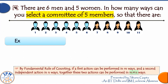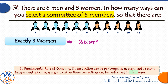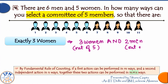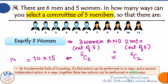Next, if the committee must have exactly three women, the same thought process applies. Exactly three women means the remaining two are men. Three women out of five can be selected in 5C3 ways, and two men out of six in 6C2 ways. 'And' means multiply: 5C3 × 6C2 = 10 × 15 = 150 ways of forming the committee with exactly three women.